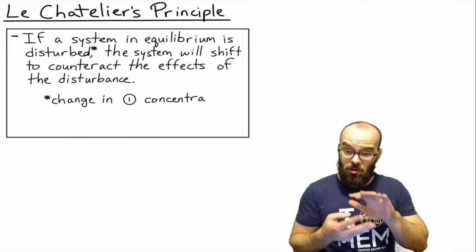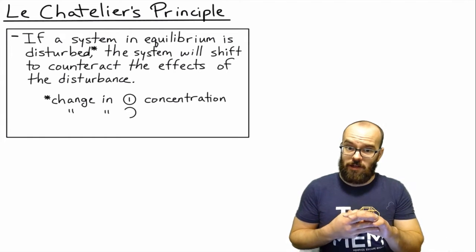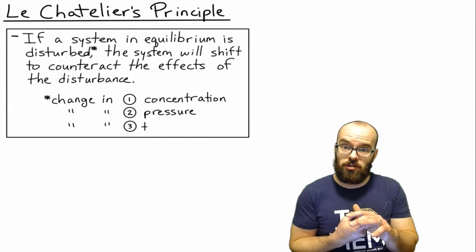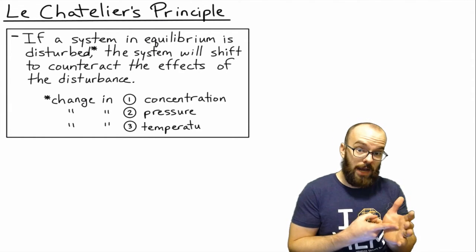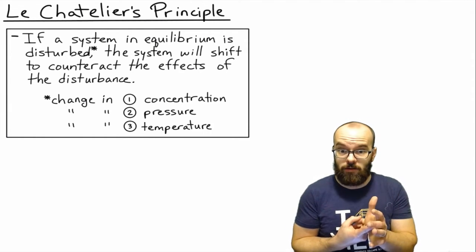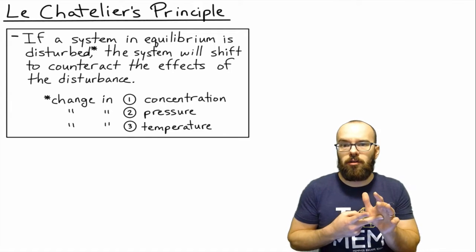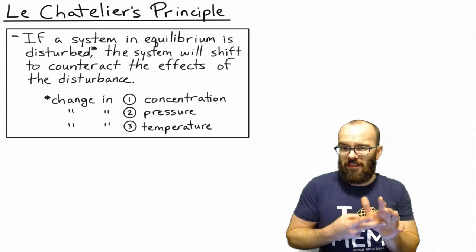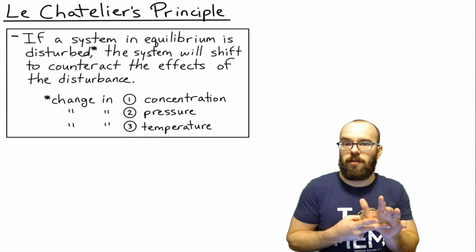The disturbance could be one of three things: it could be a change in concentration of either a reactant or a product, or it could be a change in pressure — and that's going to be when we're dealing with a reaction involving gases.